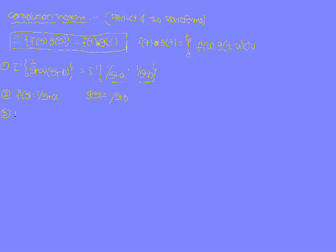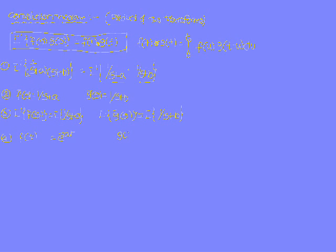Next, apply L inverse to both. L inverse of f̄(s) = L inverse of 1/(s + a) = e^(−at), so f(t) = e^(−at). Similarly, applying L inverse to ḡ(s): g(t) = L inverse of 1/(s + b) = e^(−bt).